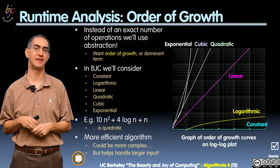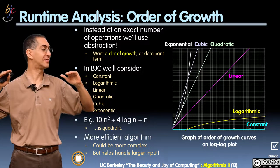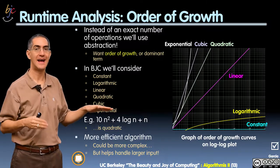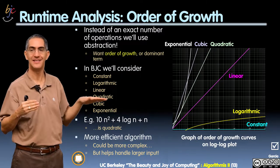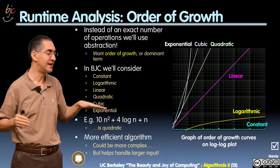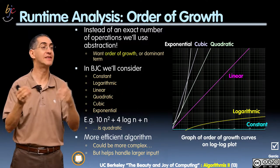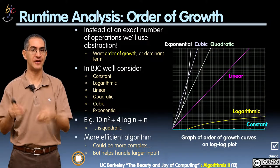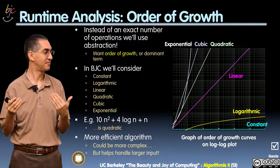These six categories start with constant. If you look at the curve, as the input grows, I take no more time. The input doubles, same number of time. Input triples, same number of time. The input grows by a factor of 100, same amount of time. Here's an example of that. I've got a list, and your function is supposed to return the first element of the list.